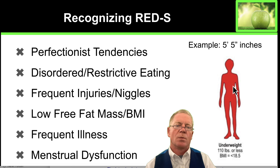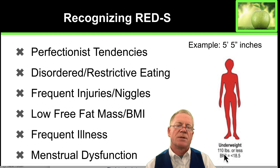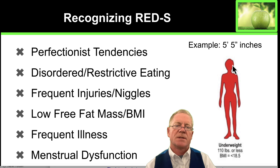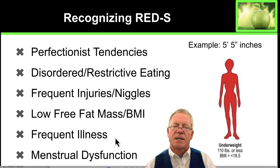A BMI below 18.5 means you need to see a medical professional — a doctor or registered dietitian — to get checked. For example, a person who is five foot five inches tall and under 110 pounds is underweight and needs to see a medical professional. Alongside RED-S, you also see frequent illness and oftentimes menstrual dysfunction.